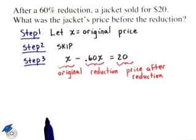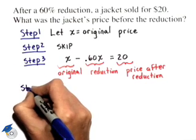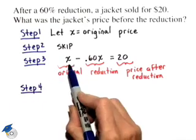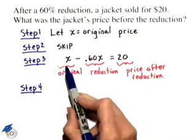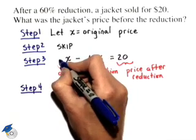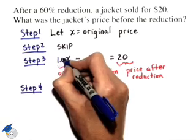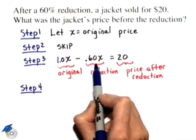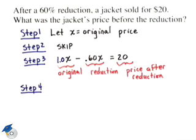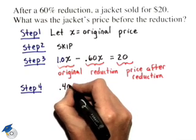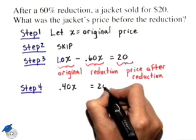Now we can solve this problem in step 4. On the left-hand side, we have like terms: x minus 0.60x. This x has a coefficient of 1, or 1.0, and I can subtract 0.60 from that, and I'll get 0.40x equals 20.